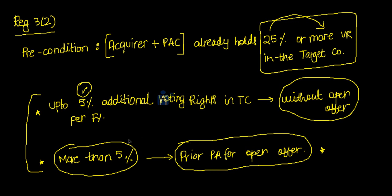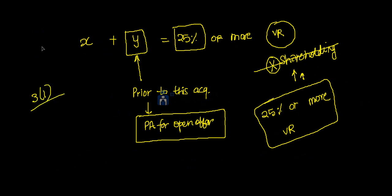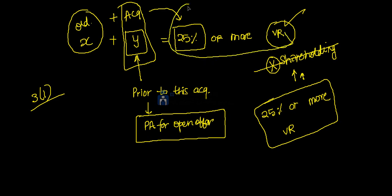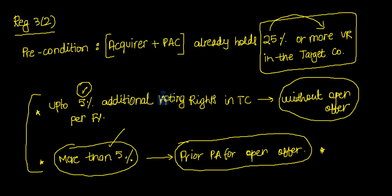The precondition is: if you hold 25% or more voting rights in a target company, then in a financial year you can acquire additional 5% of the voting rights without attracting the obligation to make an open offer. But if you acquire more than 5% in a financial year, you will have to give a prior public announcement for the open offer — prior to acquiring those shares. Regulation 3(1) didn't have any precondition of pre-holding. It just says that whatever is your old holding plus whatever you are acquiring — if that takes your consolidated voting right to 25% or more — then prior to this acquisition you need to give a public announcement. So pre-holding becomes very important in 3(2), while in 3(1) what matters is the consolidated voting right after acquisition.